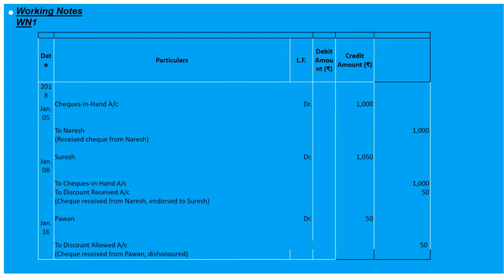Now the working notes: on January 5th, Cheques-in-Hand Account debited, 'To Naresh' — 1,000. Then on January 8th, Suraj's Account debited 'To Cheques-in-Hand' 1,000 and 'To Discount Received' 50 rupees — so Suraj is debited with 1,050.